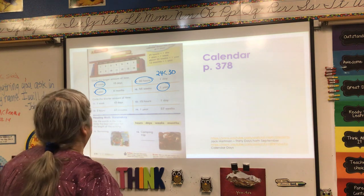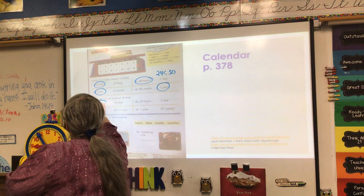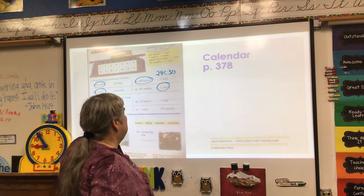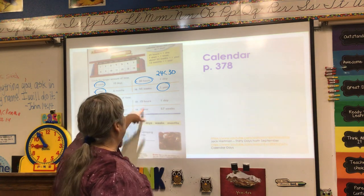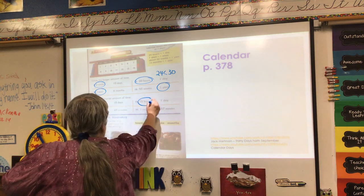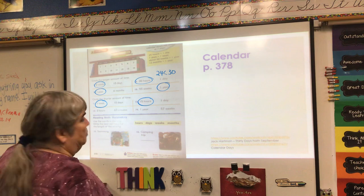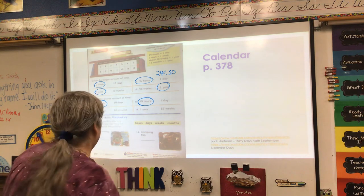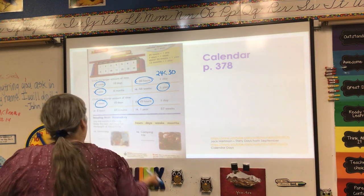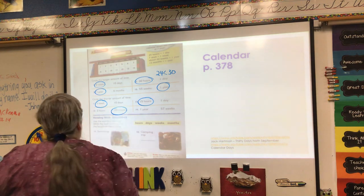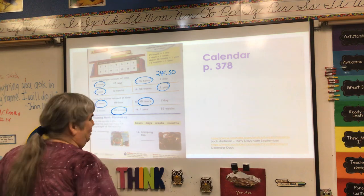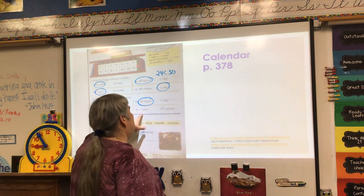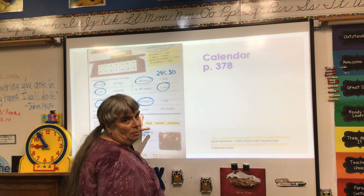Now we're supposed to circle the shorter amount of time. 7 days is less than 10 days. We know there are 24 hours in a day — 2 sets of 12, we talked about that — so 15 hours is the shorter amount. 2 hours or 60 minutes? We know 60 plus 60 is 120, so those would be 2 hours — but 60 minutes is only 1 hour, so that's shorter. 1 year or 57 weeks? Now even though 57 is my favorite number, 1 year is less because a year is 52 weeks.